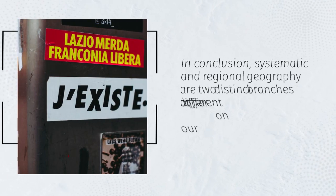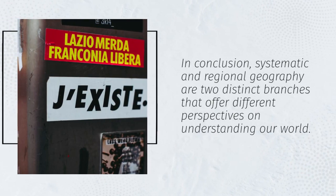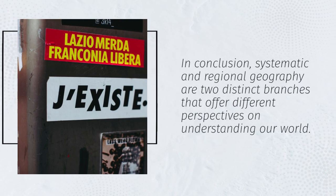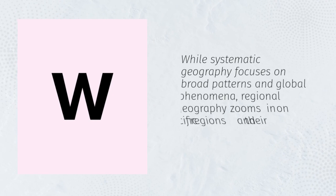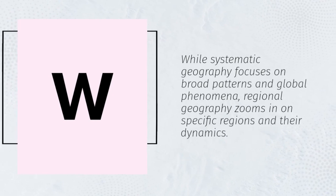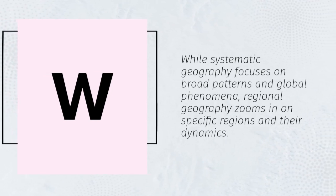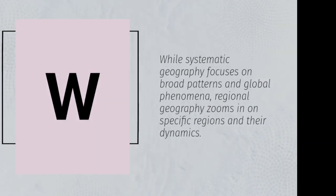In conclusion, systematic and regional geography are two distinct branches that offer different perspectives on understanding our world. While systematic geography focuses on broad patterns and global phenomena, regional geography zooms in on specific regions and their dynamics.